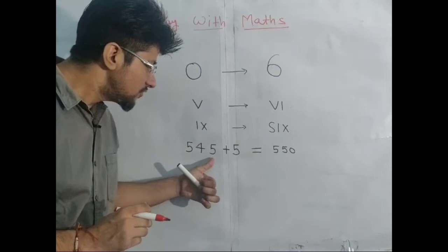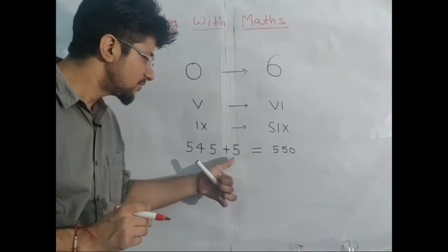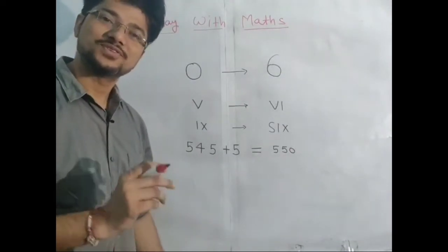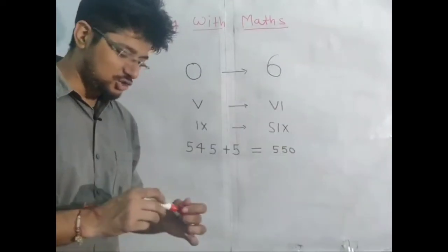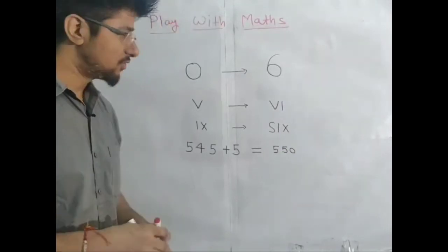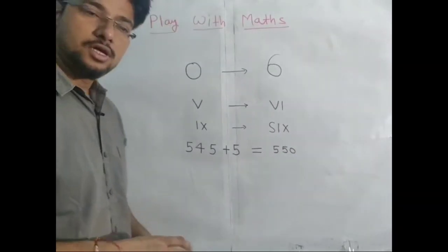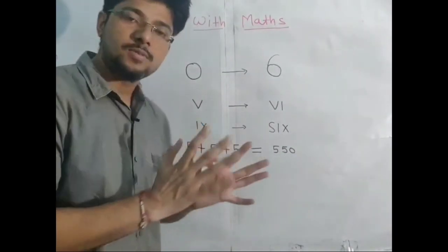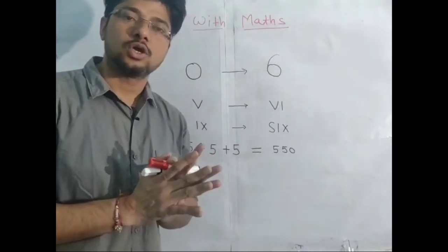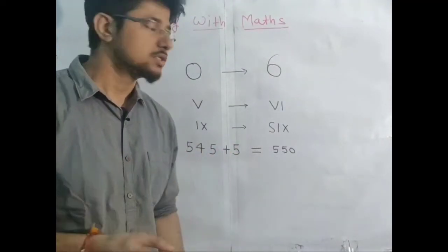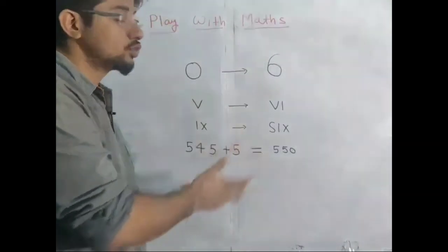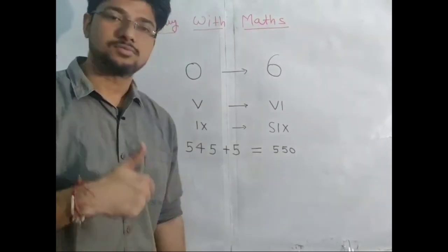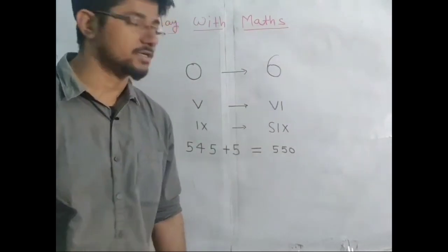That was the condition — you can make a straight line or a curved line. Now this is 545 plus 5, which equals 550. I'll bring more videos with more tricks like this. I hope you enjoyed — now you can play with your friends!